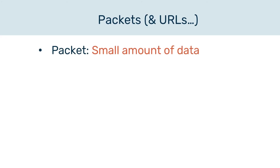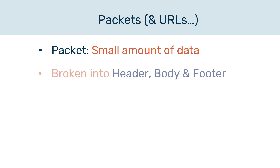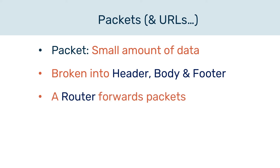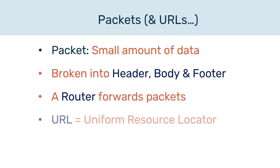A packet is just a chunk of the larger data being transmitted. It's divided into a header, body and footer, so it contains other information to help route it and details for security. A router is a device whose purpose is to forward these packets. The internet uses packet switching, meaning packets can pass the data through different paths from source to destination. And finally, URL stands for Uniform Resource Locator, and it's the way we use to specify the resource we want to access.